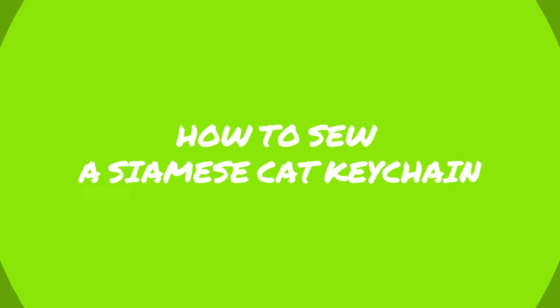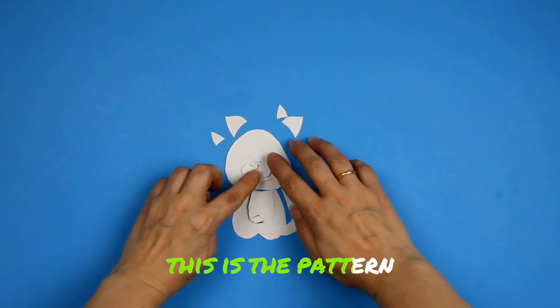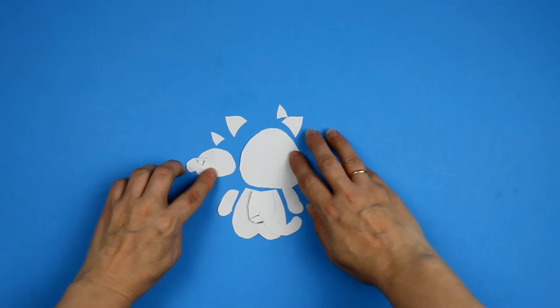Hi and welcome to my channel, this is Sophia. Today we are making a Siamese cat keychain. This is the pattern.